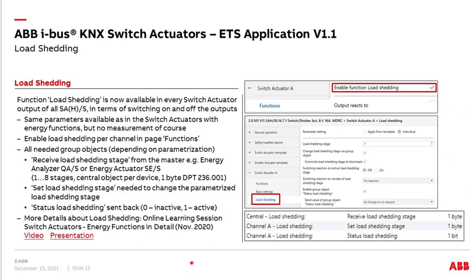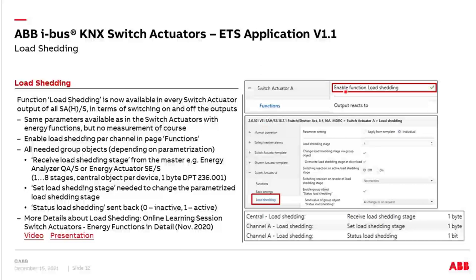Let's look at the parameters. In all the components, you enable the load shedding function under Functions at the output — for example Output A — and then you get a collection of the typical parameters you need to adjust. Of course, also dedicated group objects handle the load shedding solution. The principle is a one-byte object that receives the load shedding stage number which has to be turned off. In the output you assign which shedding stage belongs to that output — in my case, stage one. You can also change the shedding stage telegram if needed.